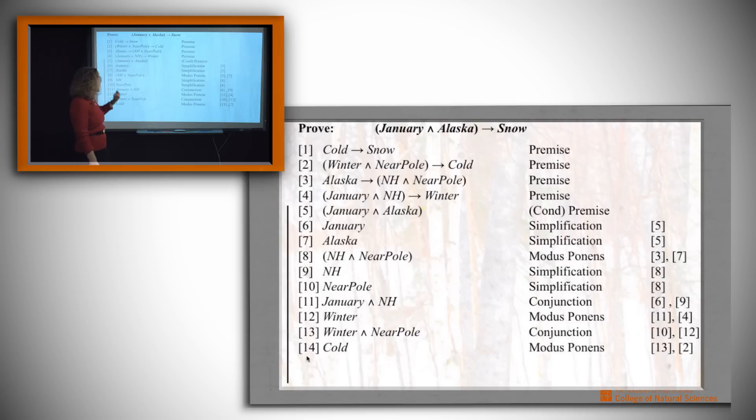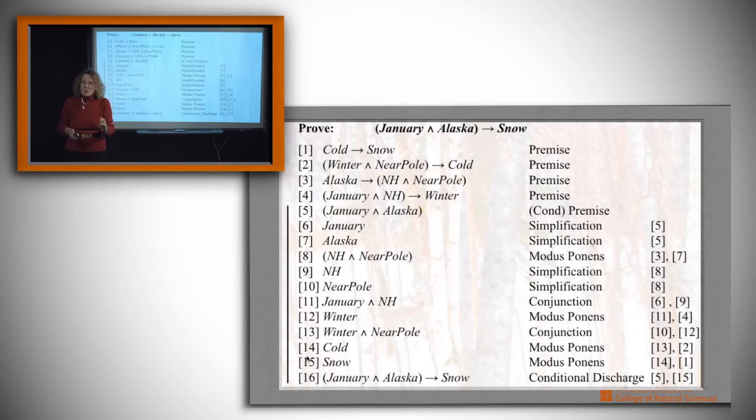Good. We're almost there. Now we can use cold and modus ponens and derive snow. What have we got? Have we proved snow? No. What we've proved is that January and Alaska imply snow. So let's write that down. And the justification for that is that we used the discharge part of the conditionalization rule. We combined the conclusion snow with the assumption that we made all the way back up there to say that if it's January and Alaska, then snow.